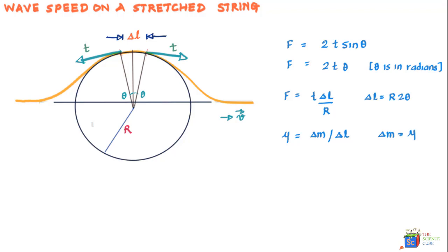We can also see that the string element Δl is moving in an arc of a circle and therefore should experience a centripetal acceleration v² / R towards the center. The centripetal acceleration on the string element of length Δl is v² / R.